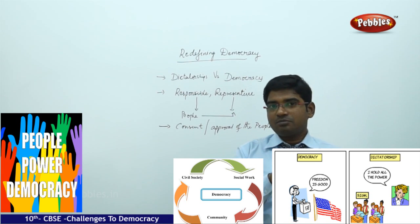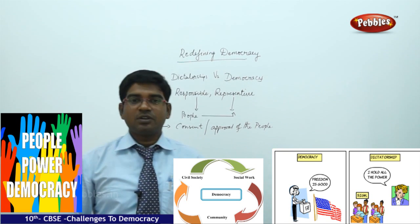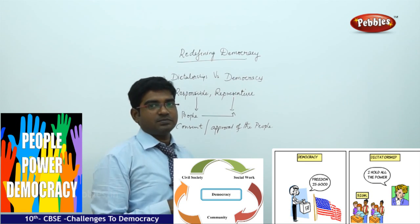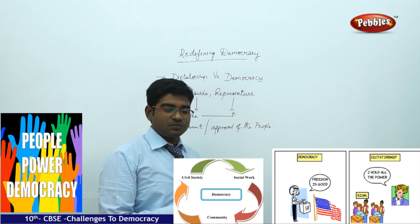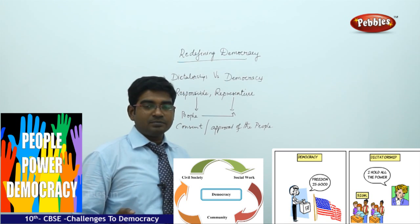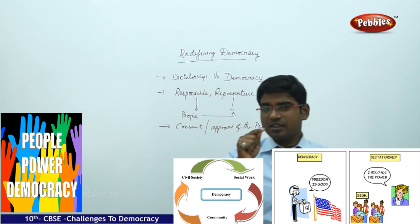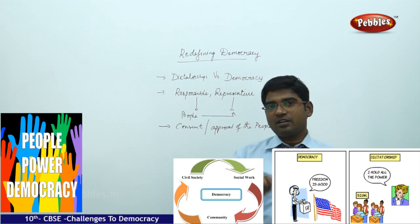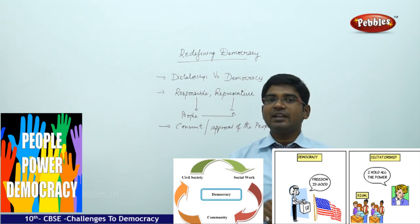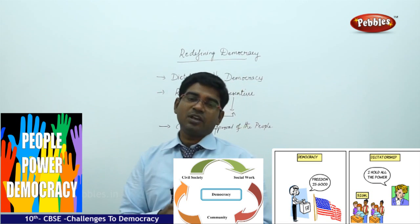Neither political parties nor elections can be absent — if either is missing, it would obviously lead to the destruction of democracy. Elections or political parties may be delayed, but if neither political parties exist nor elections are held, then there is no democratic structure existing in that particular country.